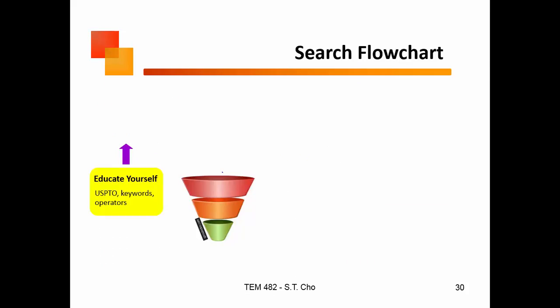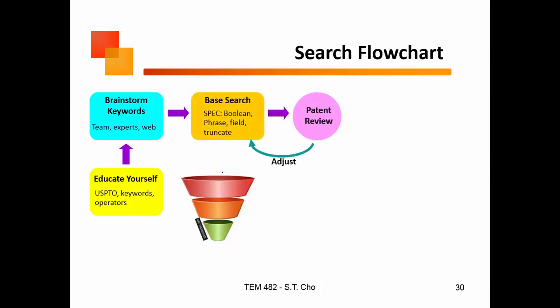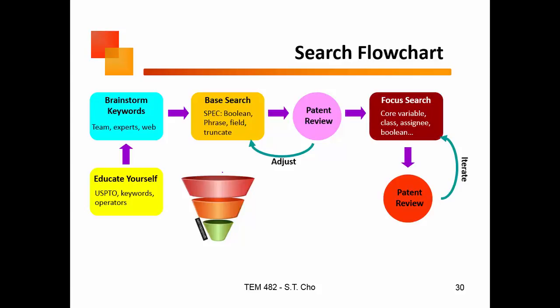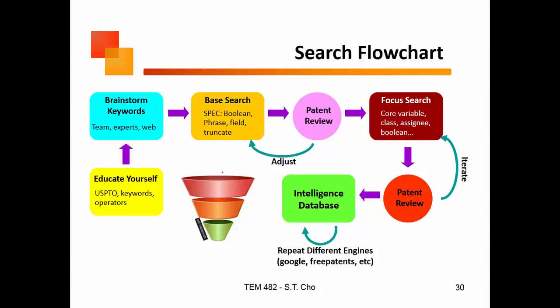So you know all the products that compete with you. What is the process you go through in a search? First, you educate yourself on keywords — get people together and figure out the most relevant keywords. Then you do your base search to find out the base number of patents you need to look at. It's a process where you review, adjust your terms, find the useful ones, then focus your search down. You look more specifically and find out whether the patents of interest relate to a company, a class, or a product class. That's the second iteration of review.